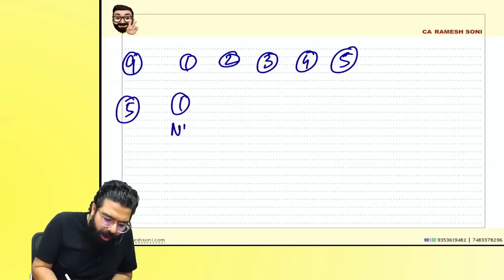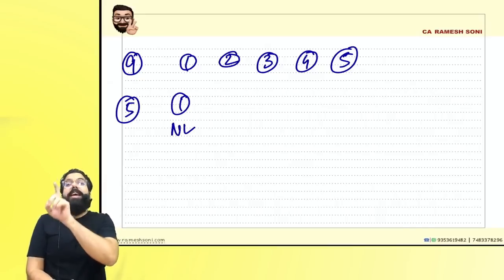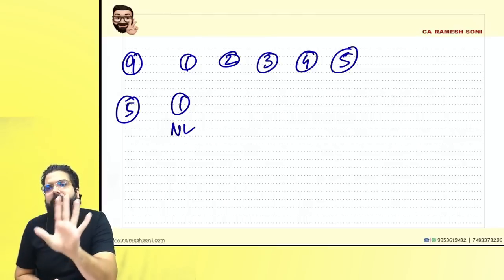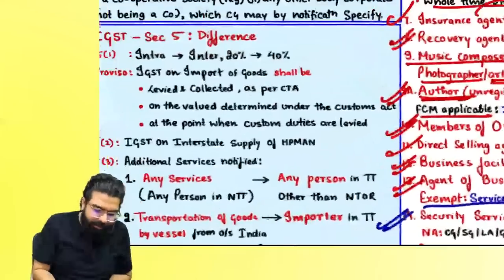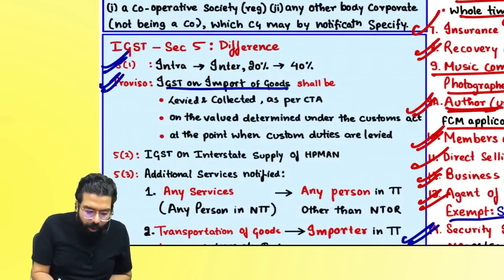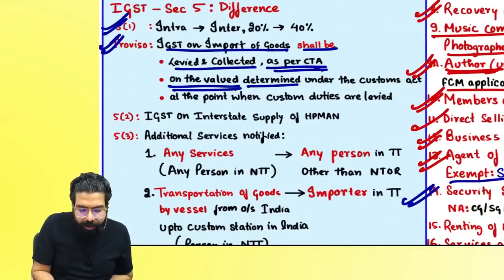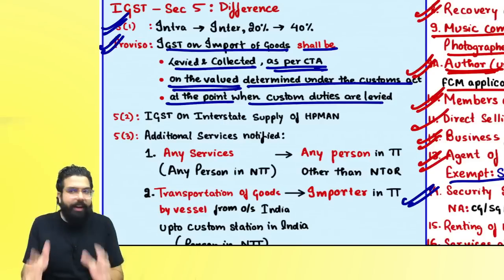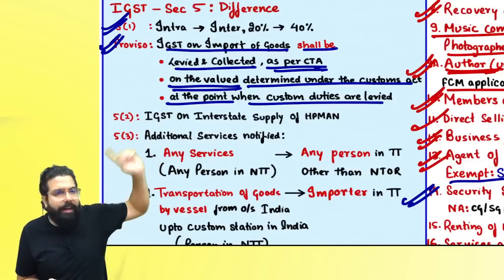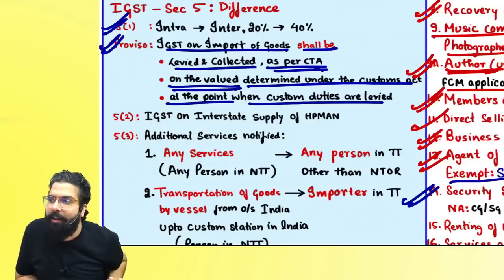Under Section 5(1), a proviso states: whenever goods are imported, it is always treated as interstate supply and IGST applies. IGST on imports is levied and collected as per the Customs Tariff Act, on the value determined under the Customs Act, at the point when customs duties are levied. Section 5(2) covers HP man — same as Section 9(2), IGST from a notified date. Section 5(3) has the same services as Section 9(3) for RCM on interstate supplies.